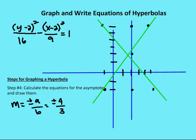The next step is to calculate the equations for the asymptotes and draw them. The simpler process is just to take the slope of the asymptotes and plot the lines from the center. From my center, I count four units up and three units to the right, four units up and three units to the left, four units down and three units to the left, and four units down and three units to the right. These give me the points through which I can draw my asymptotes.